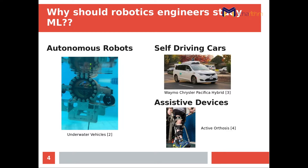This happens to be an AUV, which is short for autonomous underwater vehicle. What this vehicle does is pipeline inspection for the oil industry.